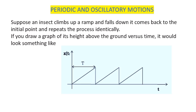Suppose an insect climbs up a ramp and falls down. It comes back to the initial point and repeats the process identically. If you draw a graph of its height above the ground versus time, it would look something like as I have drawn in the following graph.